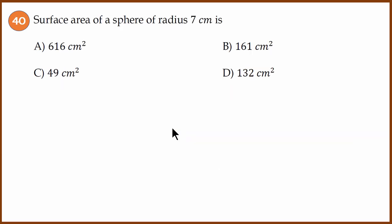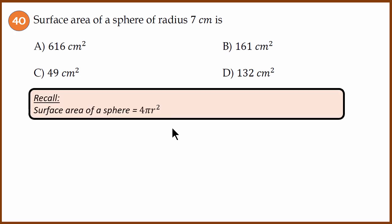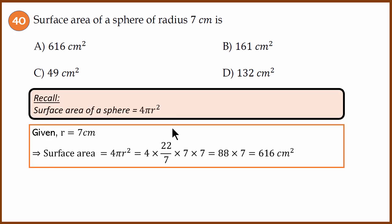Question 40: surface area of a sphere of radius 7 cm. This is an extremely common question and the answer is 616 cm². We've solved all 20 questions from 21 to 40. Hopefully you found this useful — see you soon with a new video. Till then, bye, thanks.